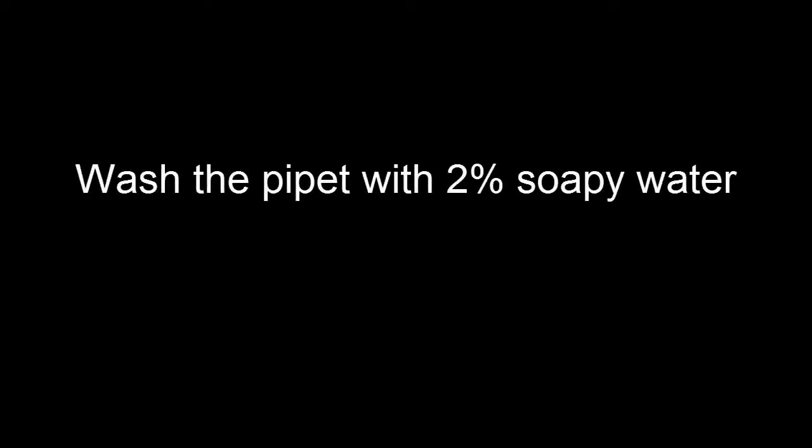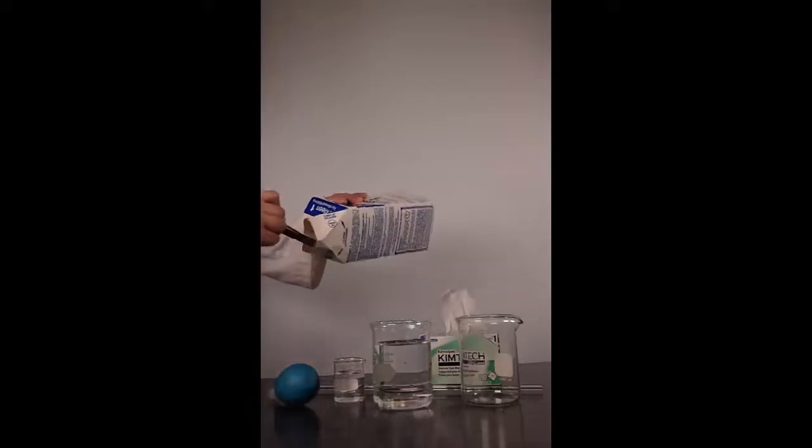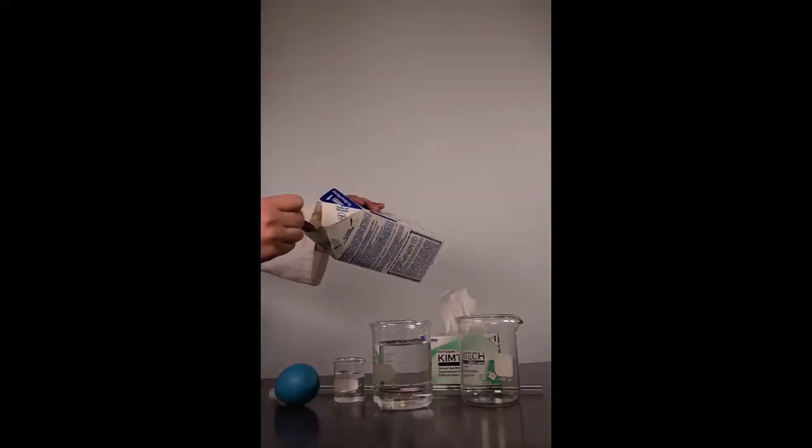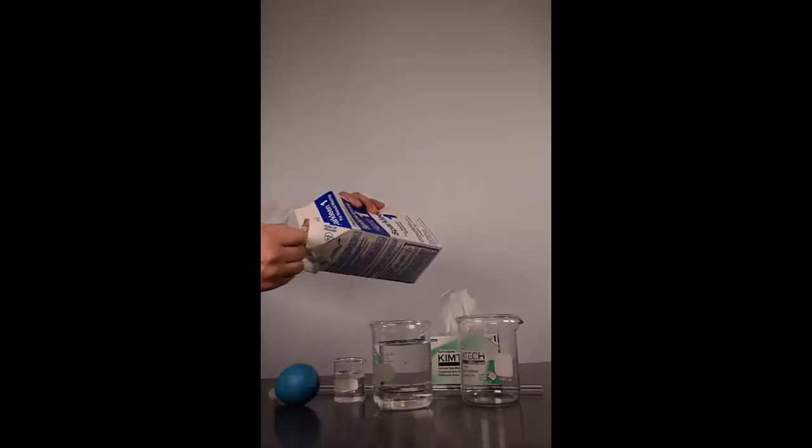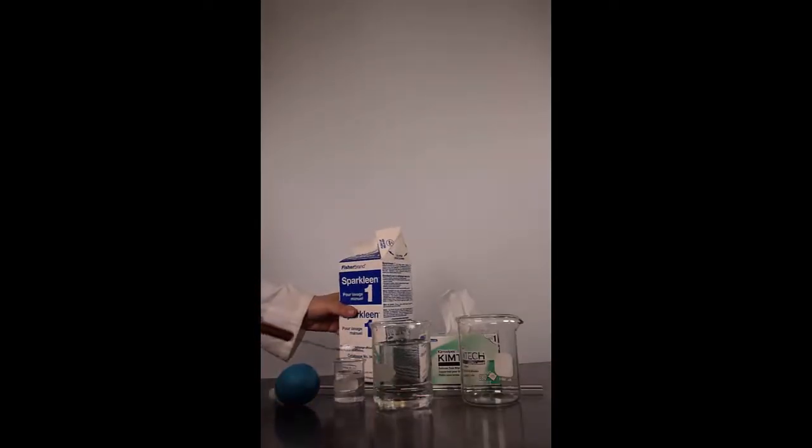To clean a dirty pipette, wash it with a 2% solution of soapy water. Dissolve a small amount of detergent into warm water. Using too much soap will make it difficult to rinse the soap from your pipette, contaminating it further.